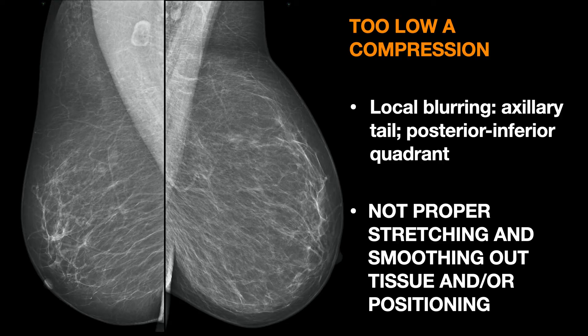Other two examples of inadequate compression. Also in the MLO projection, the blurring could be very localized — to the axillary tail or, more typically, to the posterior inferior quadrant. Low compression is usually associated with not proper positioning in this projection.